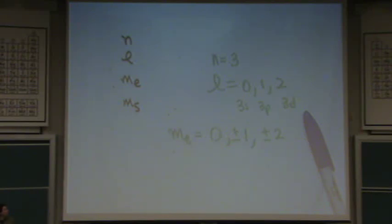Every M sub L value is one orientation in space for an orbital. So there's three P orbitals means there's three orientations for P in space. Okay, if we have three S, how many M sub L values? One, and there's only one S orbital, which hopefully makes sense. There's only one way to orient a sphere. So three S only has one M sub L value.